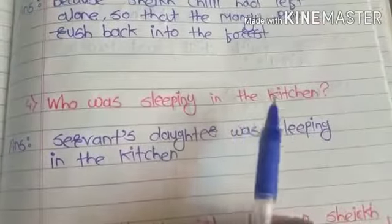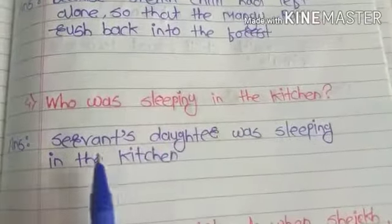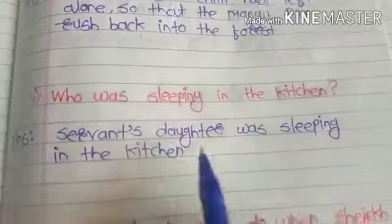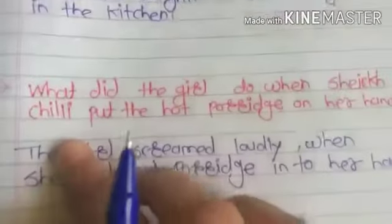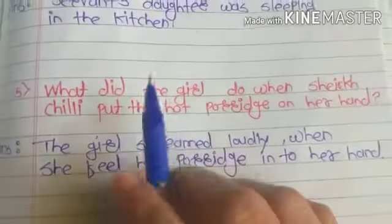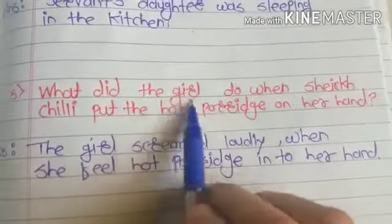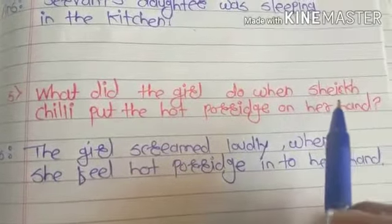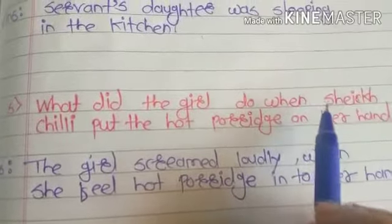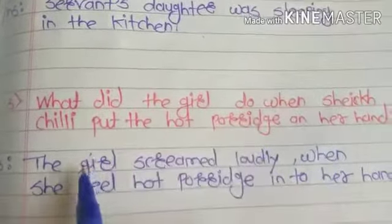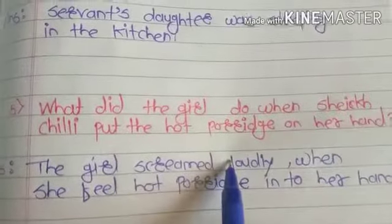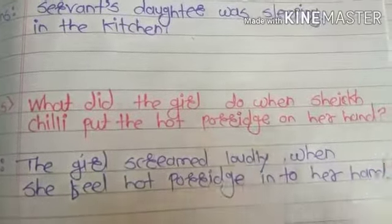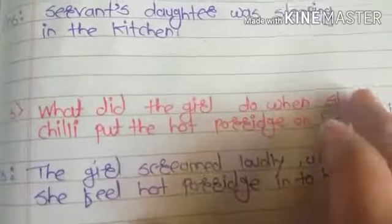Who was sleeping in the kitchen? The servant's daughter was sleeping in the kitchen. What did the girl do when Sheikh Chilli put hot porridge on her hand? The girl screamed loudly when she felt the hot porridge on her hand.